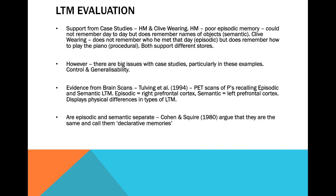Another case study is Clive Wearing, who had brain damage and again has really poor episodic memory. He doesn't know who he's met that day — there's a really good video clip where he thinks he hasn't met his wife, even though he had only moments earlier. He doesn't know what day of the week it is. But he's a really skilled musician and can still play the piano, so that long-term memory is still there. This backs up the idea that there are these different types of long-term memory and that long-term memory is not just one store.